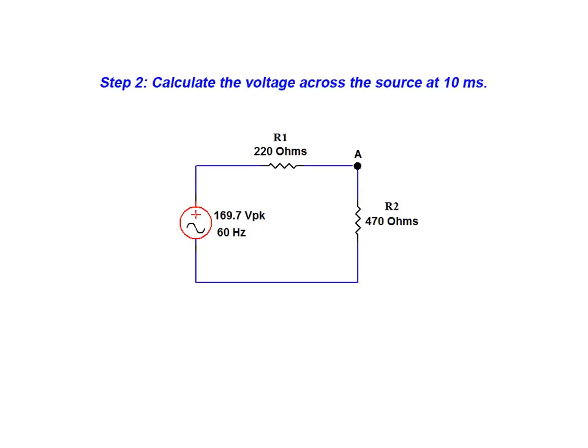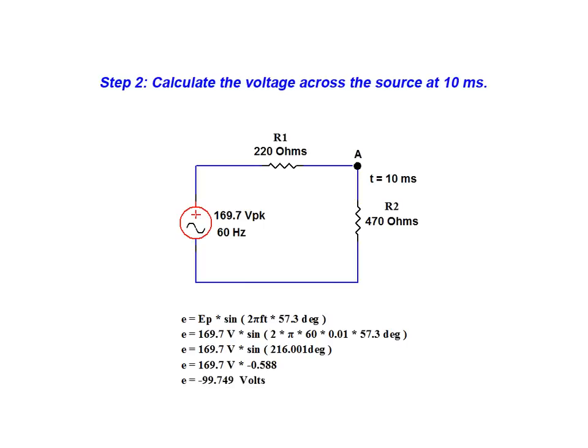The next step in the solution is to employ the instantaneous voltage relationship to calculate the voltage across the source at a time equal to 10 milliseconds. When doing the calculation, we evaluate the degree measure first. We then take the sine of the degree measure and multiply it by the peak value of 169.7 volts to arrive at an instantaneous voltage value of negative 99.749 volts at 10 milliseconds.